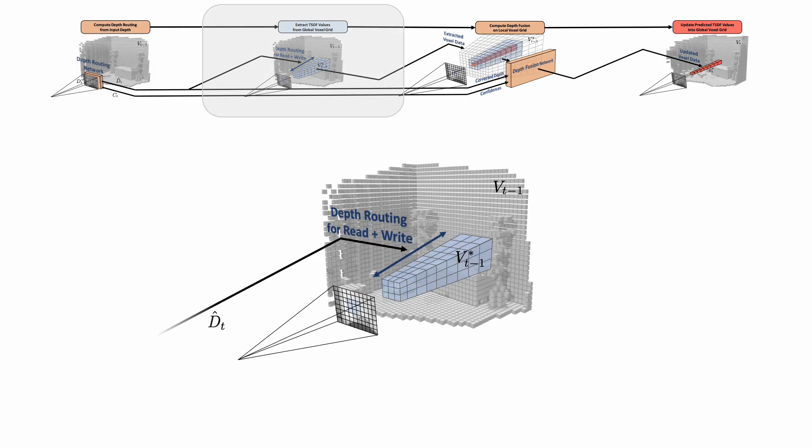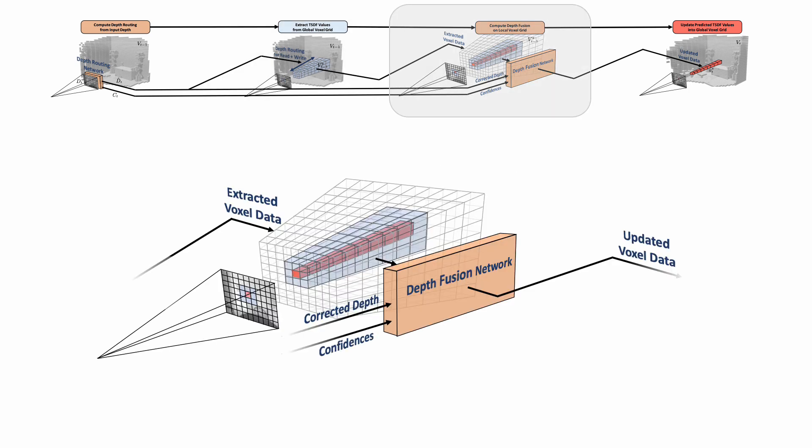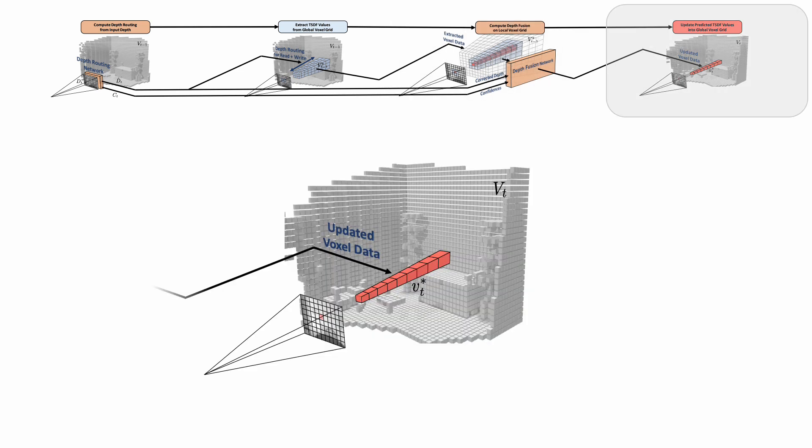The corrected depth map is used to extract the current local state from the global TSDF grid. The extracted local state is concatenated with the extracted voxel weights as well as with the depth map and the confidence map. This data is then passed through the depth fusion network. The depth fusion network estimates optimal updates given the new measurements and the old state of the TSDF grid. The estimated updates are integrated back into the global TSDF grid using the standard TSDF update equation.